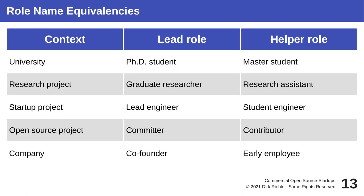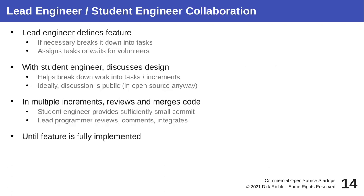A lot of terms are flying around now, but they are always really the same. There is a context that determines which words you use, but they mean the same thing. There is always a leader or lead role and those helping or supporting. The PhD student is supported by master students; the graduate researcher by a research assistant; the lead engineer by student engineers; the committer in open source by contributors; and in a company, co-founders are supported by early employees. These roles of leading and helping exist in many forms and guises but are all pretty much the same.